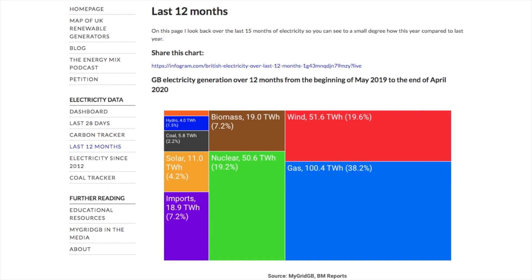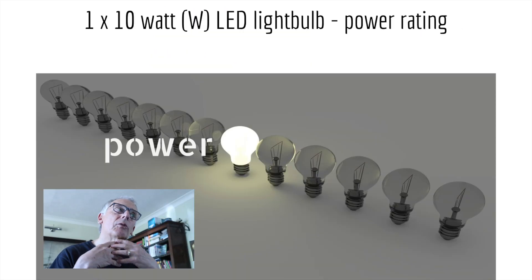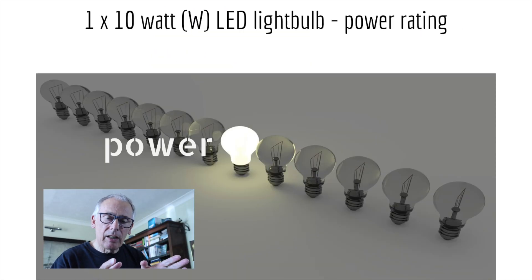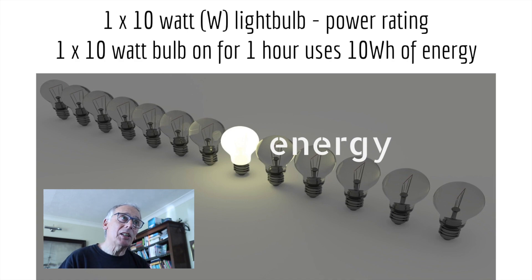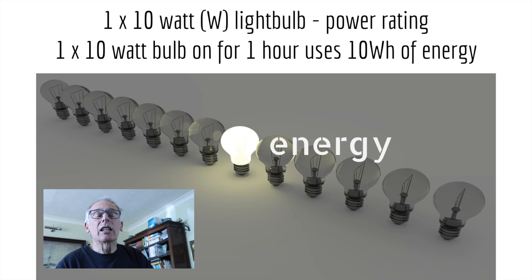Just going right back to the recap: power is the power rating. If you have a 10-watt bulb, that is its power rating. If you leave a 10-watt bulb on for a period of time in hours, it becomes the energy consumed. I hope that's been helpful. We're moving towards a discussion about low carbon, and it was essential to cover the different units of power and energy in preparation.